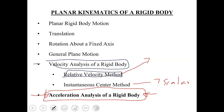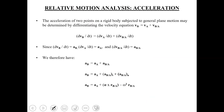Since we are studying the planar kinematics of a rigid body and we are talking about general plane motion. In general plane motion, we have seen velocity — we have seen how we can relate velocity. How do we relate the acceleration? How do we determine the acceleration for a rigid body undergoing general plane motion?